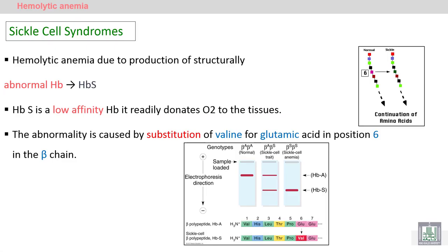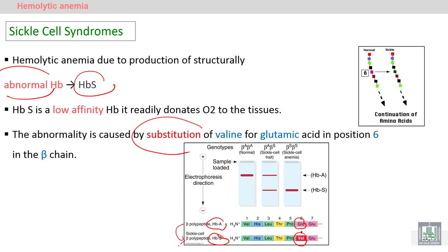Sickle cell syndromes involve hemolytic anemia due to production of abnormal hemoglobin, called hemoglobin S. This results from substitution of valine in hemoglobin S for glutamic acid in hemoglobin A — changing from hemoglobin A to hemoglobin S as a result of the substitution of valine for glutamic acid at position 6 in the beta chain, leading to the formation of hemoglobin S.